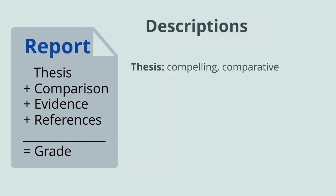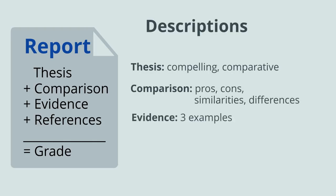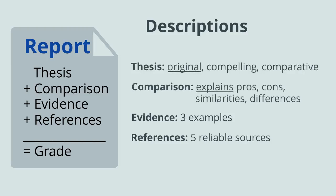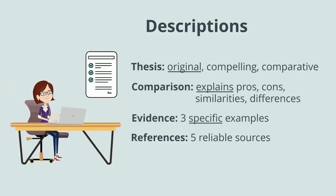Next, write descriptions of each criteria to specify your definitions of proficiency. Start by describing what acceptable proficiency looks like, then go on to describe higher and lower levels of proficiency if needed. You choose the amount of detail needed for equitable grading and feedback to students. Take care to make your descriptions clear so you and your students have a shared understanding of what's expected.